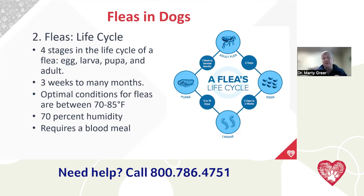Optimal flea conditions are between 70 and 85 degrees at 70% humidity. Certain climates of the United States have better conditions for fleas than others. In Wisconsin and Iowa it's cold and dry in the wintertime, so we don't have as much of a problem. But in the southern tier of states — Florida, Texas — where it's hot and humid, fleas are a huge issue. All the dogs and cats are going to have fleas unless we do something about flea and tick control.